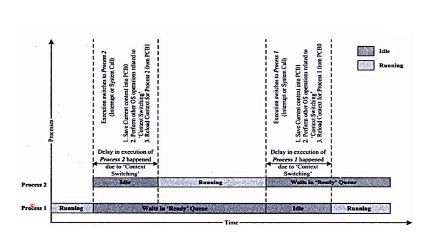In this example there are two processes — process 1 and process 2 — and two process control blocks: PCB 0 for process 1 and PCB 1 for process 2. Once context switching occurs, process 2 is in the running state. After completing, it switches back from process 2 to process 1. During that switch, process 1 is in idle state; context retrieval takes place — saving the current context into PCB 1, then reloading the context for process 1 from PCB 0. Once switching back completes, process 1 starts running again.